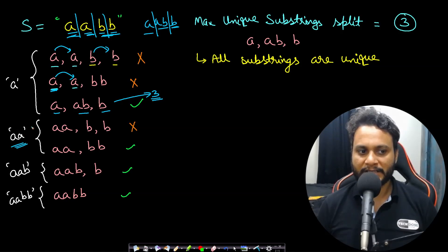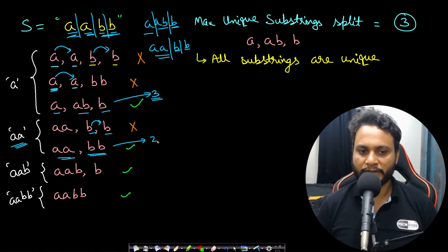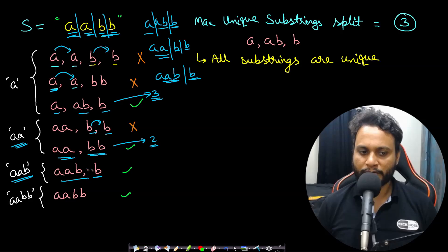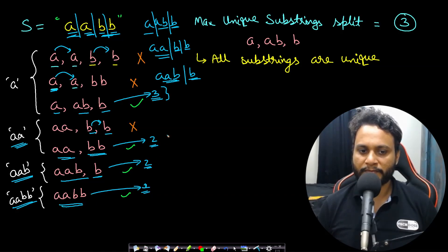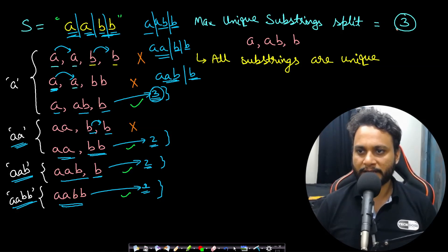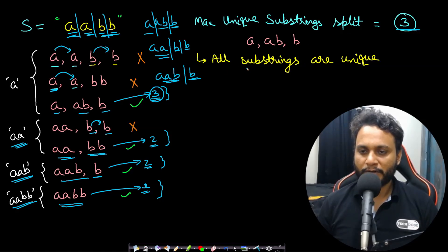We continue searching for a larger count. If we start with aa as the first split, then slicing b and b separately is invalid due to repetition, but taking bb together gives a valid split of length 2. Starting with aab gives only 2 substrings. Starting with aabb gives only 1. Out of all valid splits, the largest count is 3, so 3 is our answer.